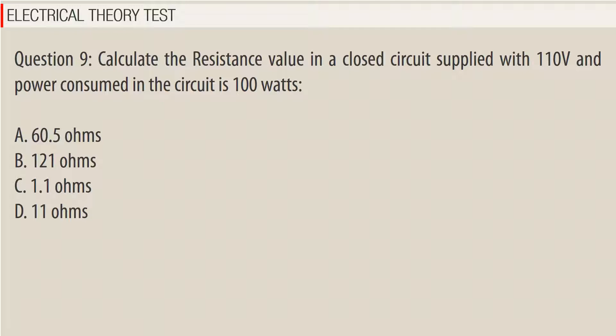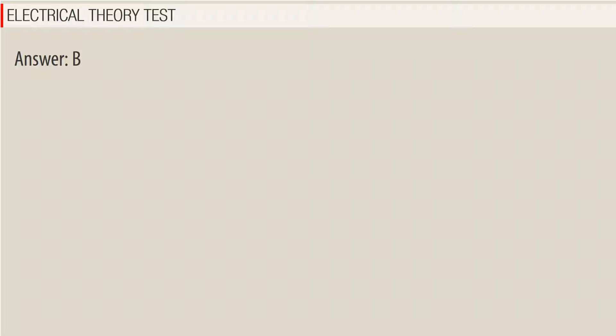Question 9: Calculate the resistance value in a closed circuit supplied with 110 volts and power consumed in the circuit is 100 watts. a) 60.5 ohms, b) 121 ohms, c) 1.1 ohms, d) 11 ohms. Answer: B.